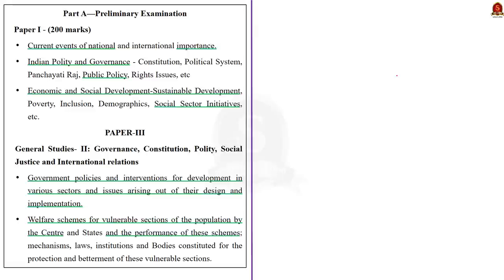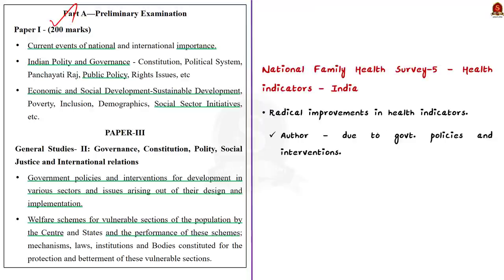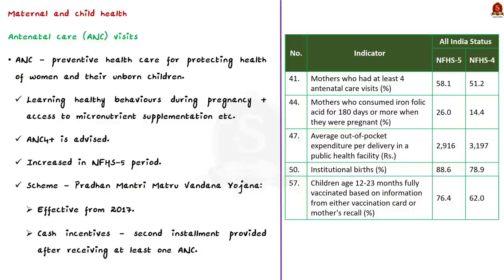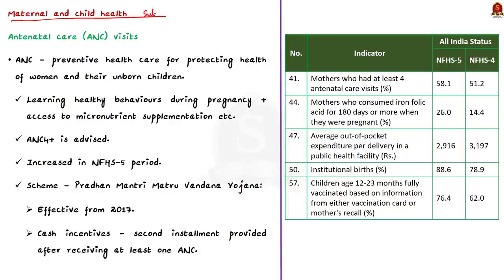Overall, radical improvements could be witnessed for many important health indicators according to the author, made possible due to government policies and interventions. We will see the survey findings under these indicators one by one, along with government policies and author views simultaneously. The first major indicator is maternal and child health, covering several sub-indicators. The first sub-indicator is antenatal care, or ANC visits — preventive health care essential for protecting the health of women and their unborn children.